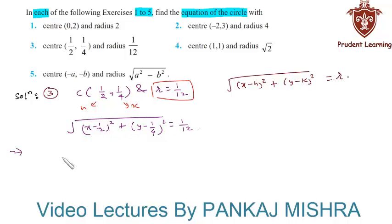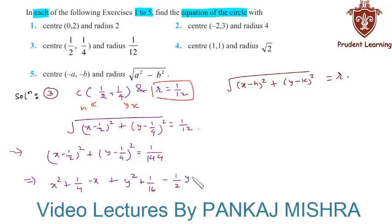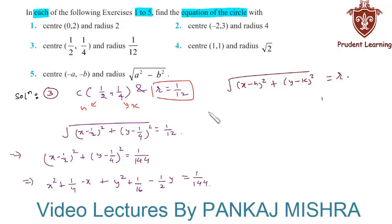Squaring both sides, we get (x minus 1/2) whole square plus (y minus 1/4) whole square equal to 1/144. Expanding: (x minus 1/2) whole square is x square plus 1/4 minus x, and (y minus 1/4) whole square is y square plus 1/16 minus y/2. This gives x square plus y square minus x minus y/2 plus 1/4 plus 1/16 minus 1/144 equal to 0.